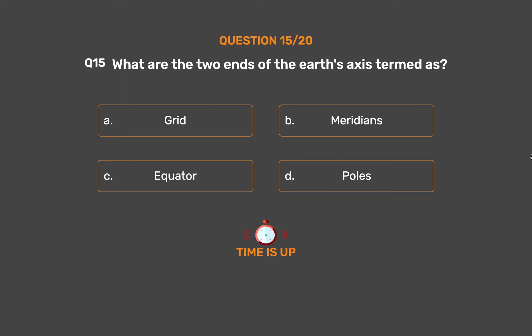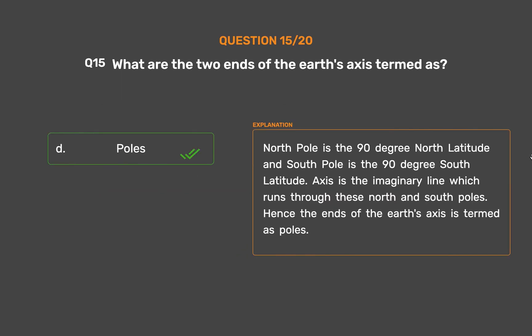The correct answer is Option D: Poles. The North Pole is at 90 degrees north latitude and the South Pole is at 90 degrees south latitude. The axis is the imaginary line which runs through these north and south poles. Hence the ends of the earth's axis are termed as poles.